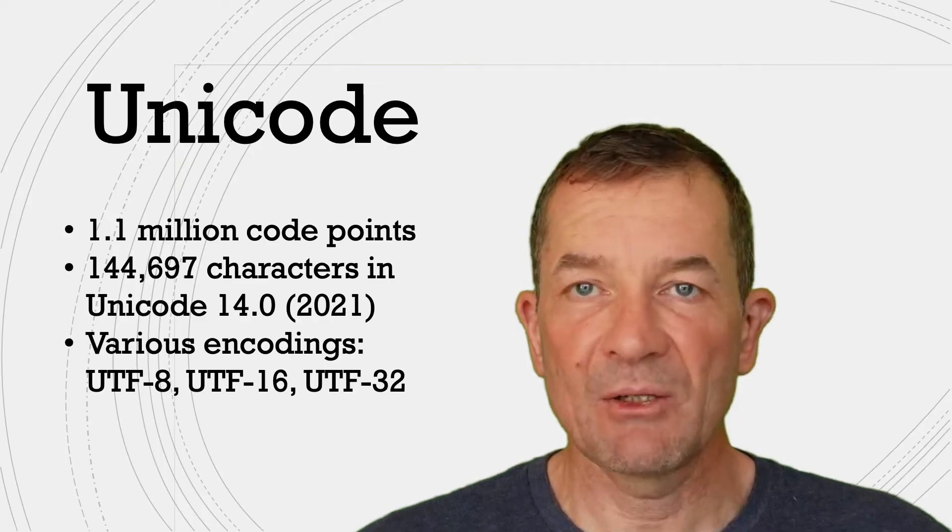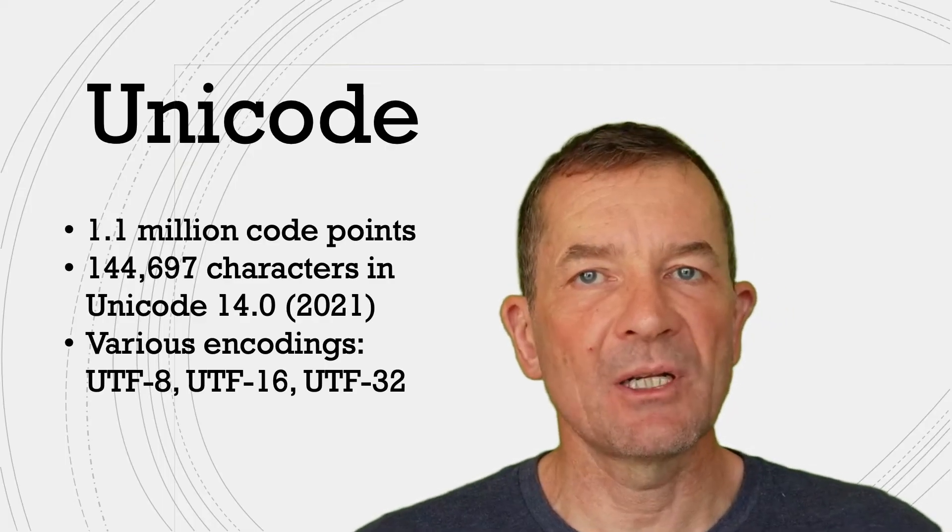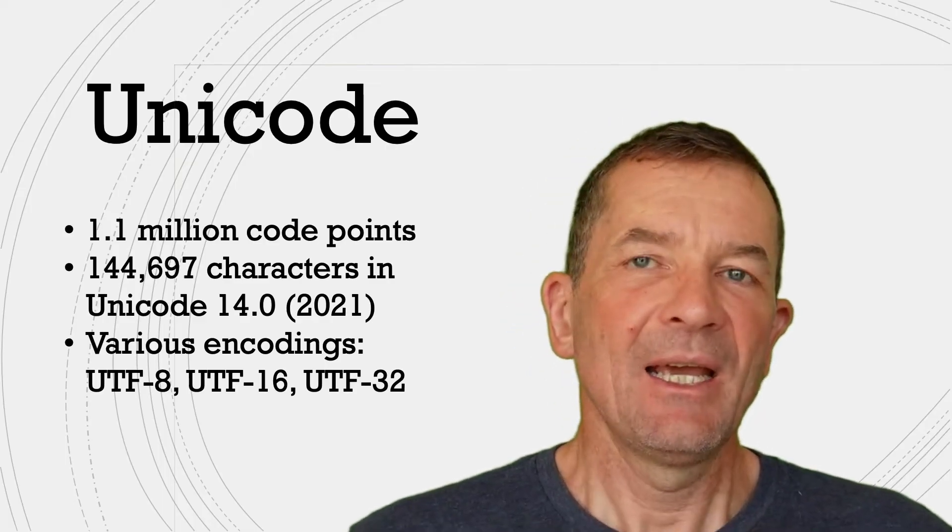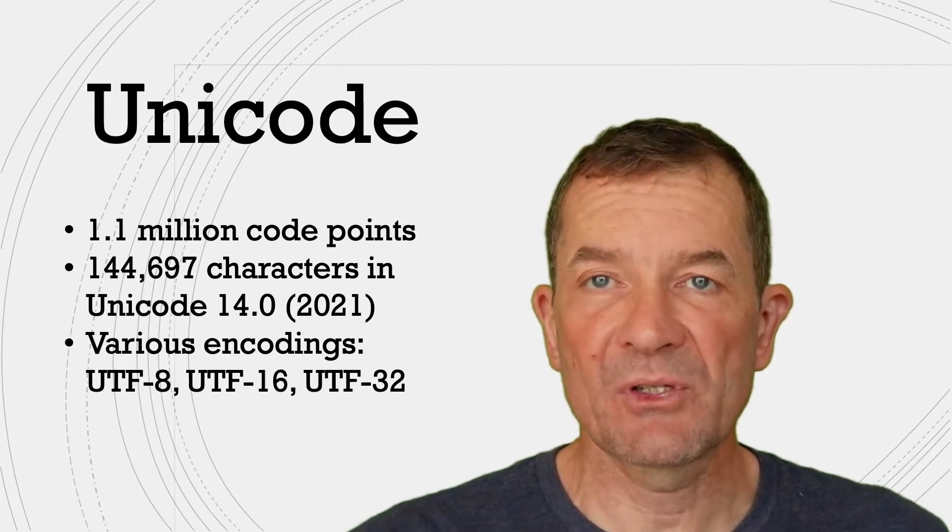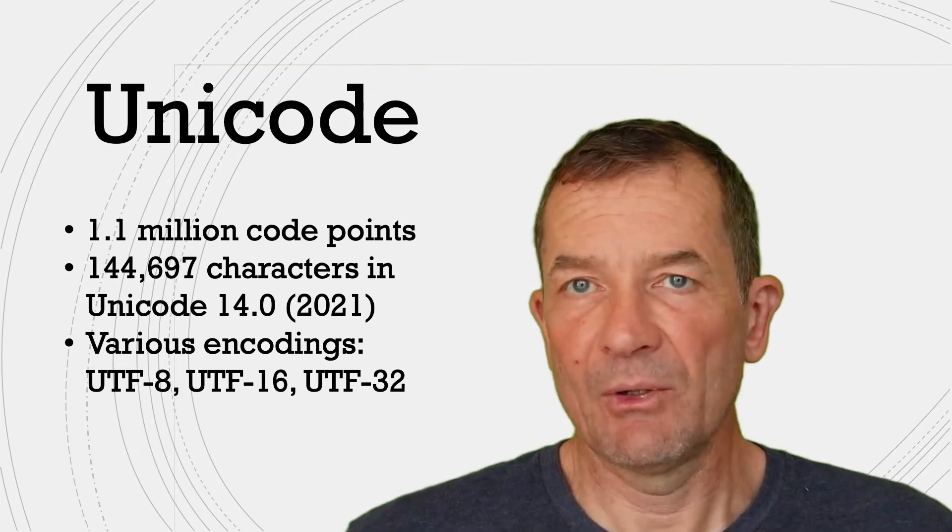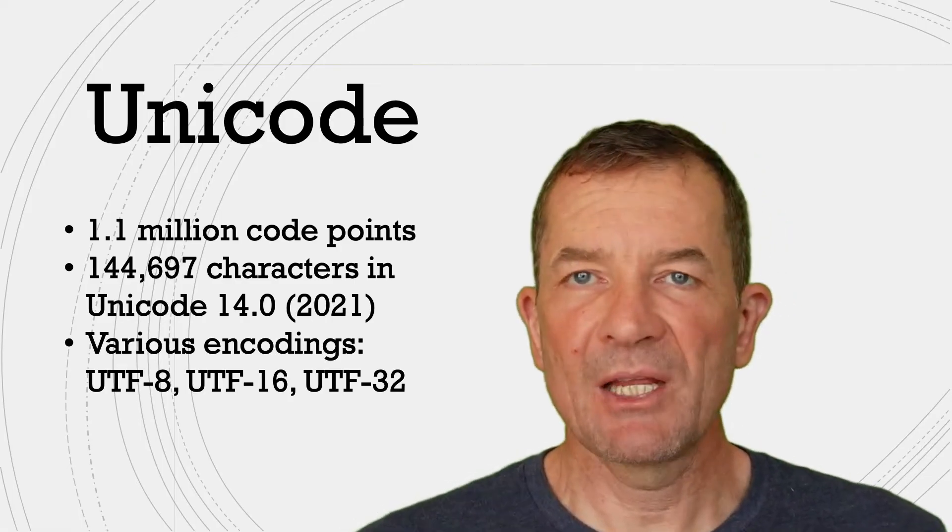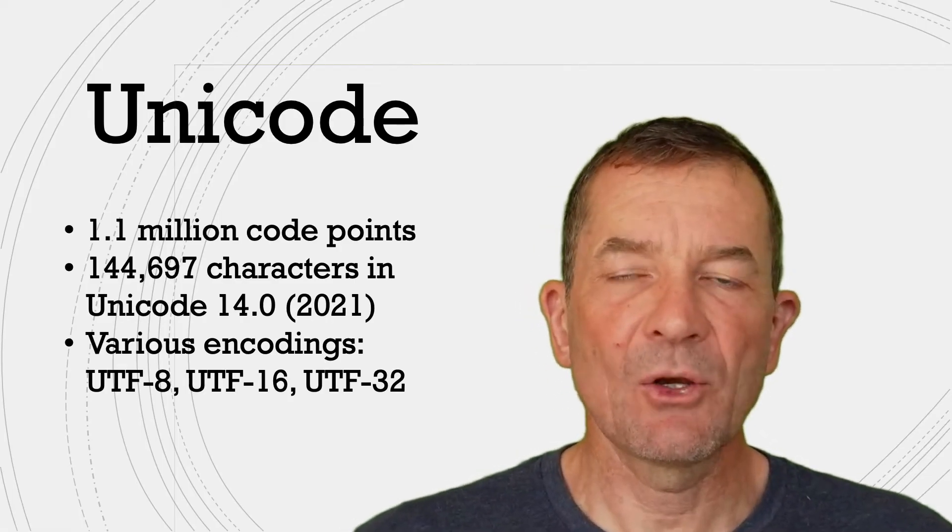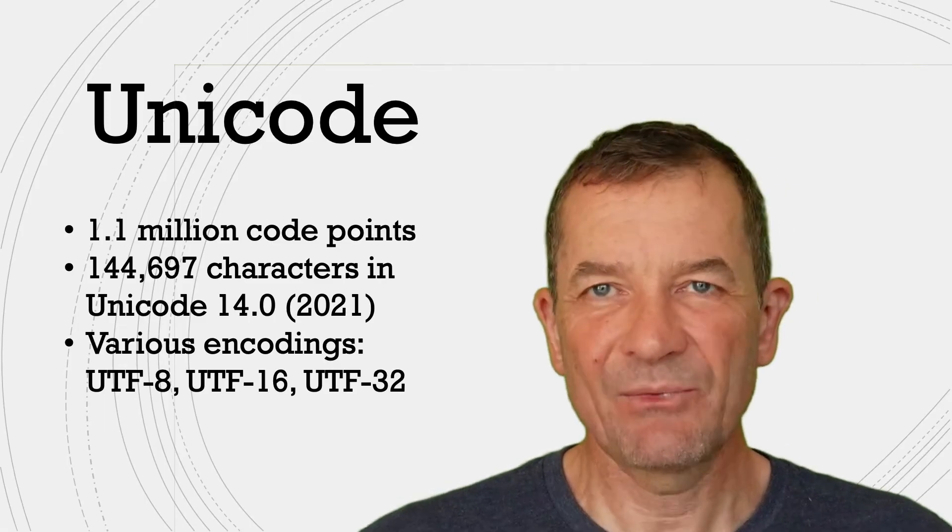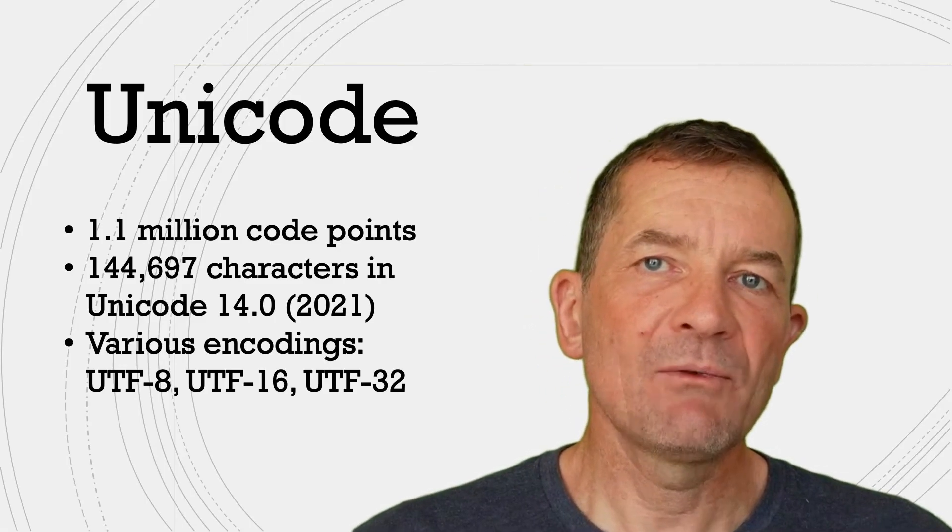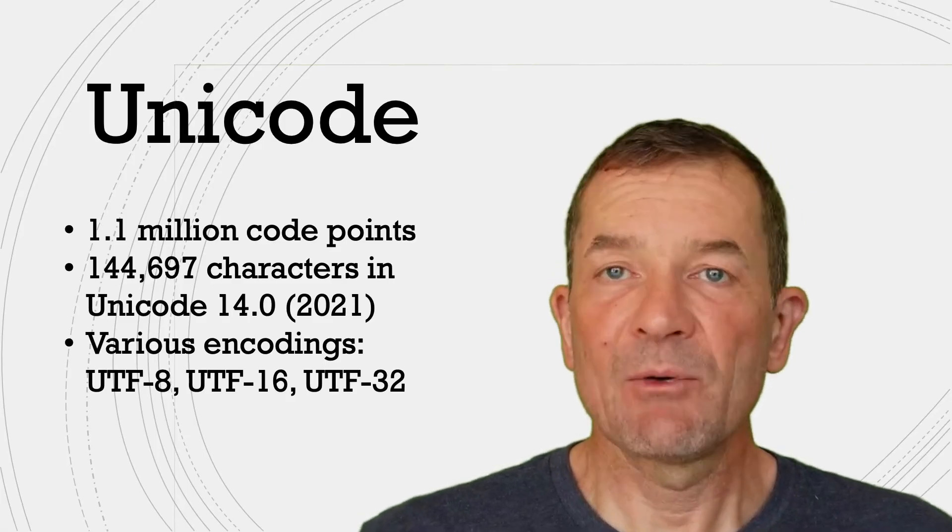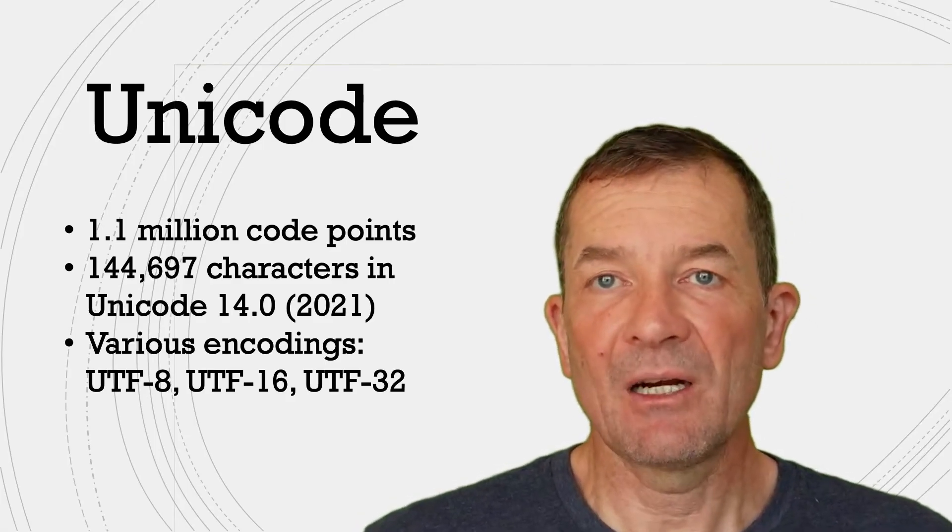Unicode has been around for a long time. It was started back in 1988 and it started with this idea of being a universal format for encoding characters. It has a very big potential character repertoire. It can encode 1.1 million different characters. In the latest version, which came out in September 2021, version 14.0,